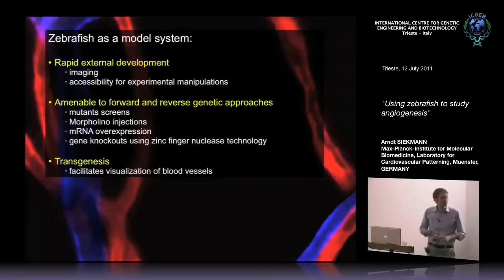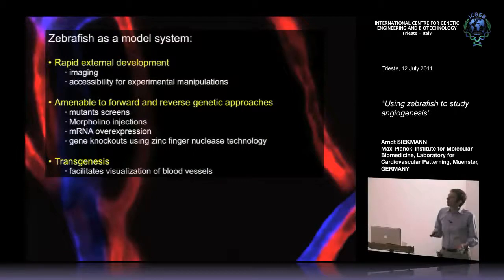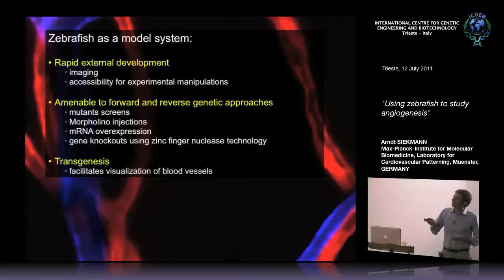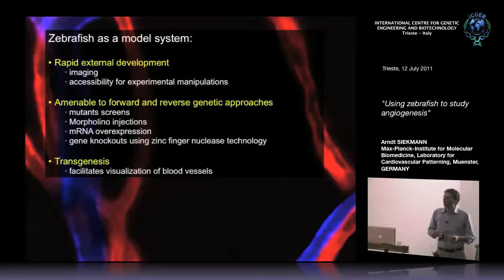We have forward and reverse genetic approaches. You can screen by inducing mutations in random genes and look for vascular phenotypes. Now we can also do reverse genetics - for example, injecting antisense oligonucleotides directly into the egg to block gene function. We also have a new technology using zinc finger nucleases, which I will come back to later.